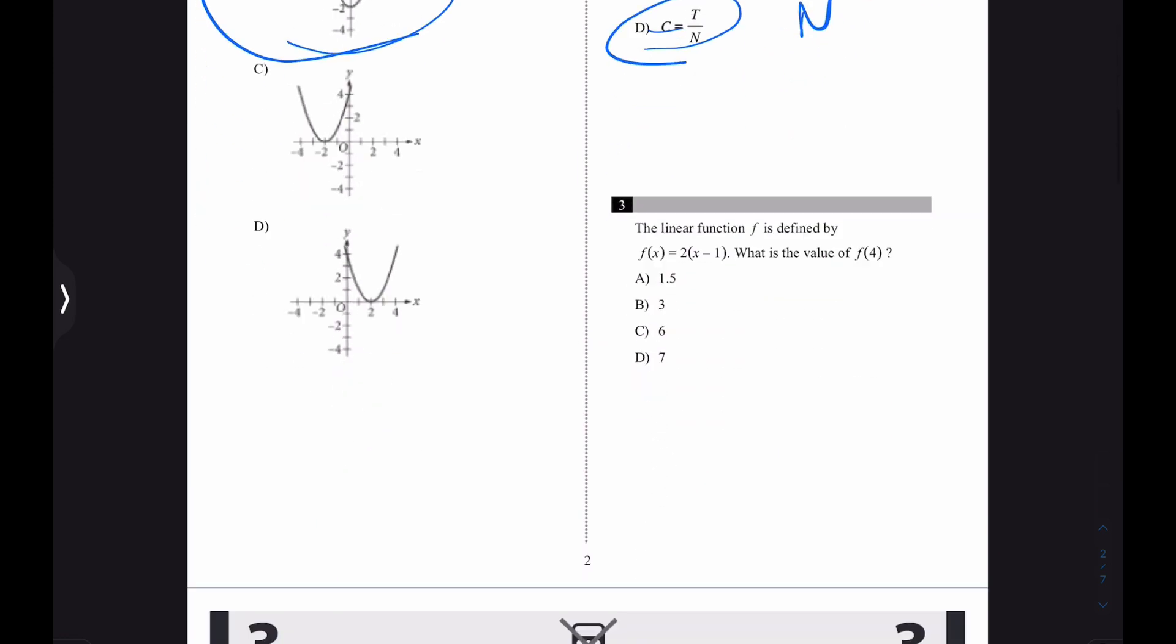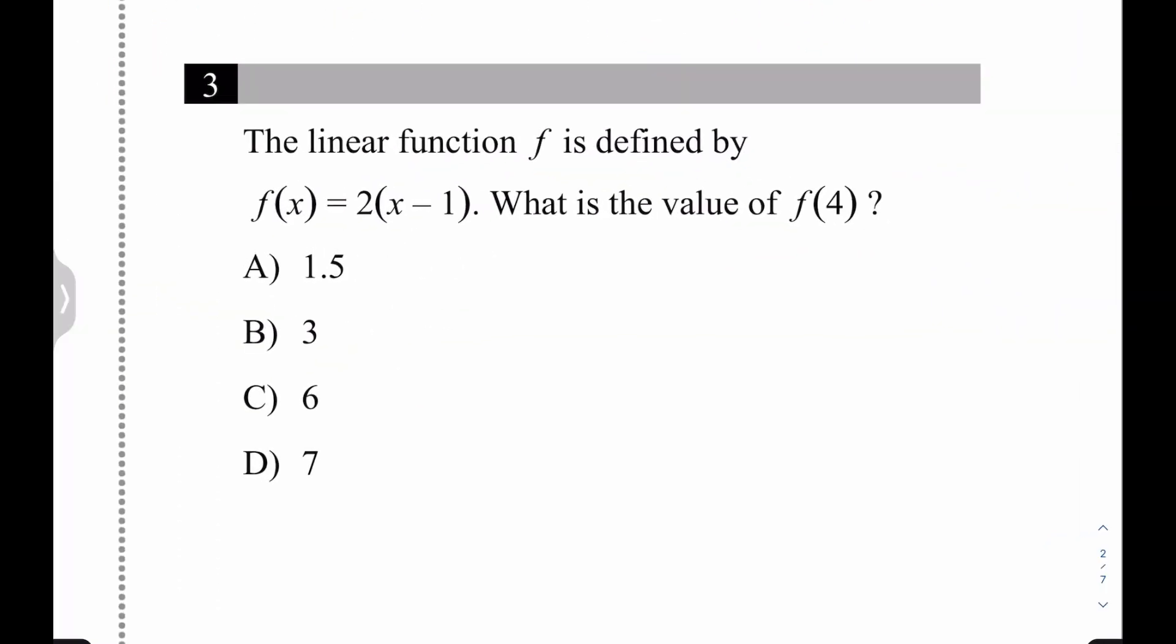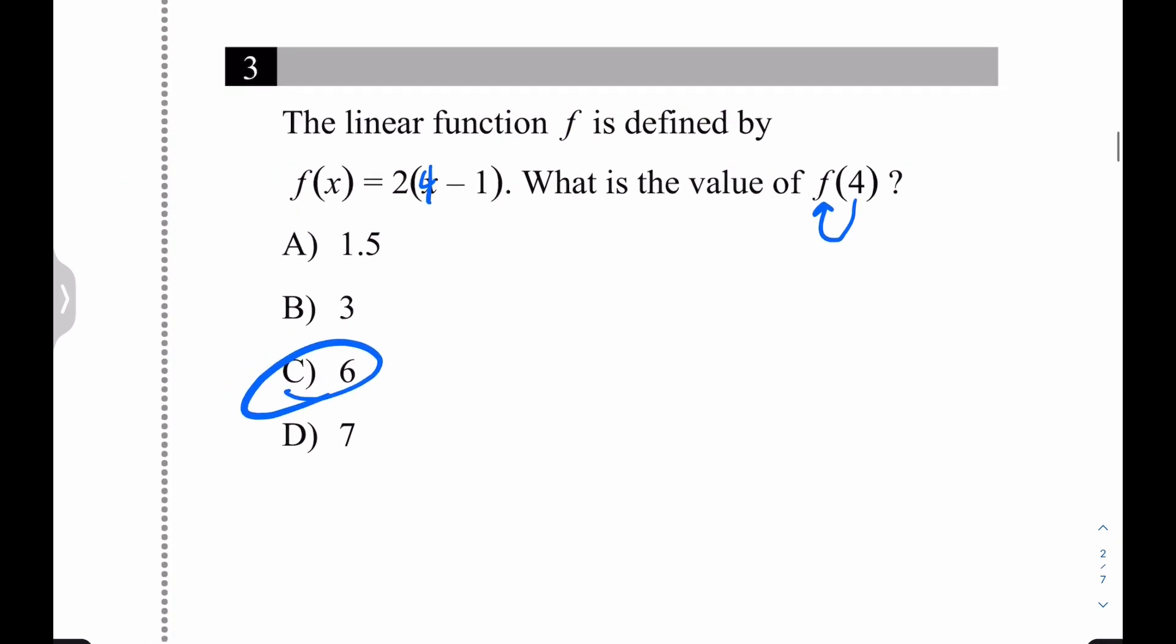Let's keep flying. This is number three. Number three says, what is the value of f of 4? So plug 4 into the function. While plugging 4 into the function, you have 4 minus 1 is 3, 3 times 2 is 6. Sweet.